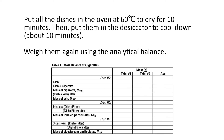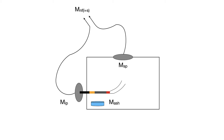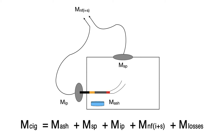Repeat these steps to get duplicate data. The picture shows you all the mass items used in this experiment. The mass balance equation is: cigarette mass equals mass of ash, plus mass of side stream particulates, plus mass theoretically inhaled by a smoker, plus mass of non-filtered material, plus mass of losses.